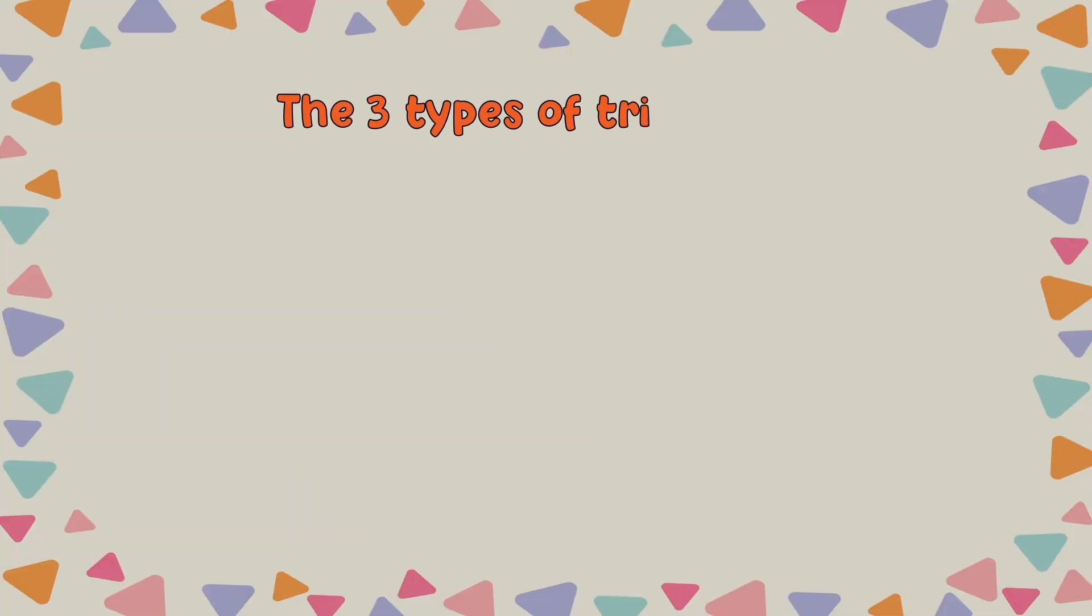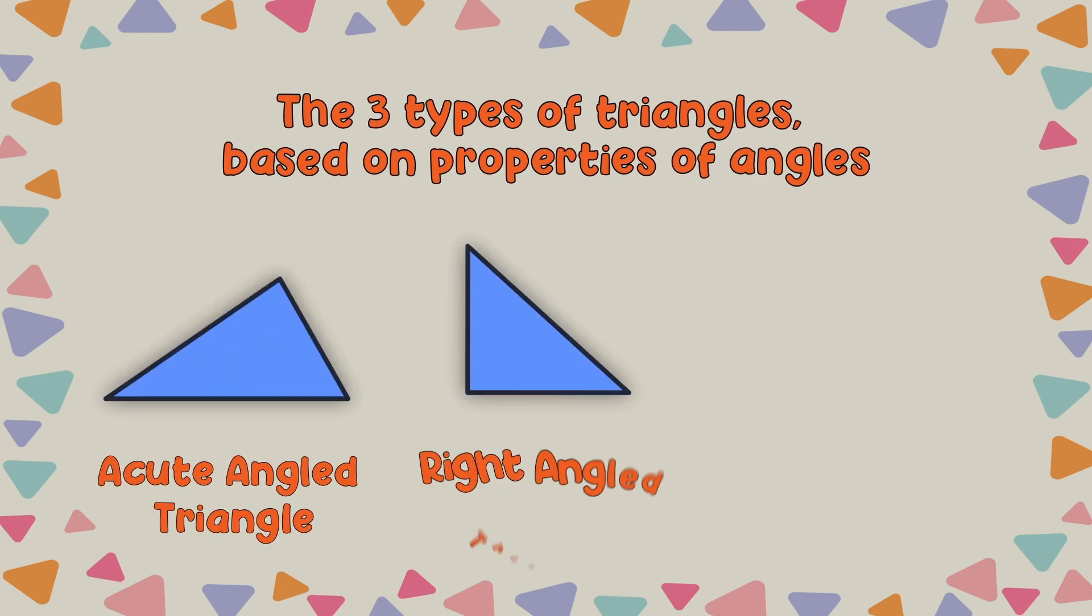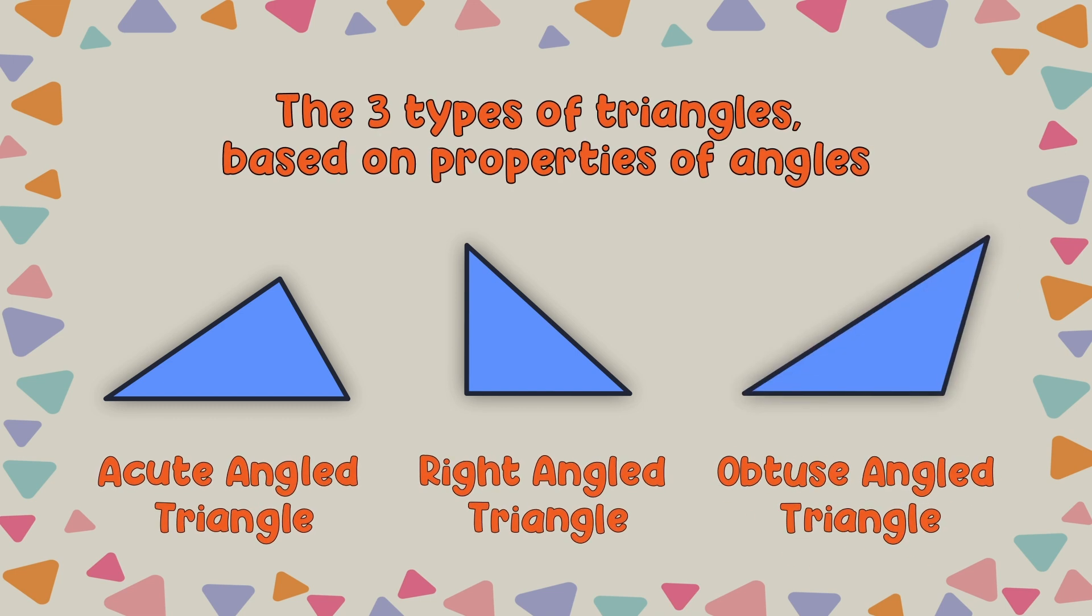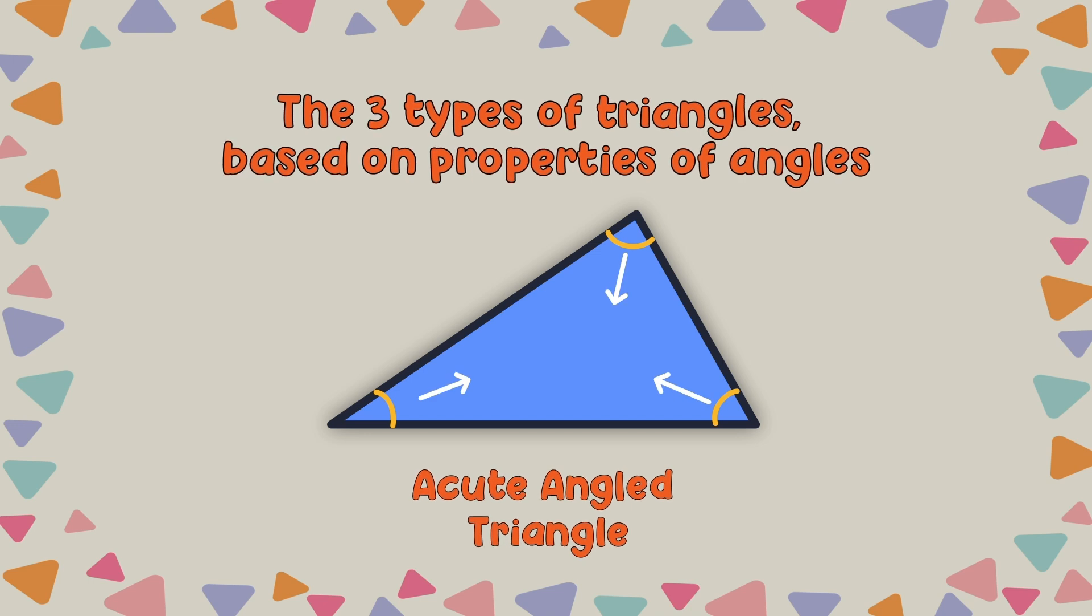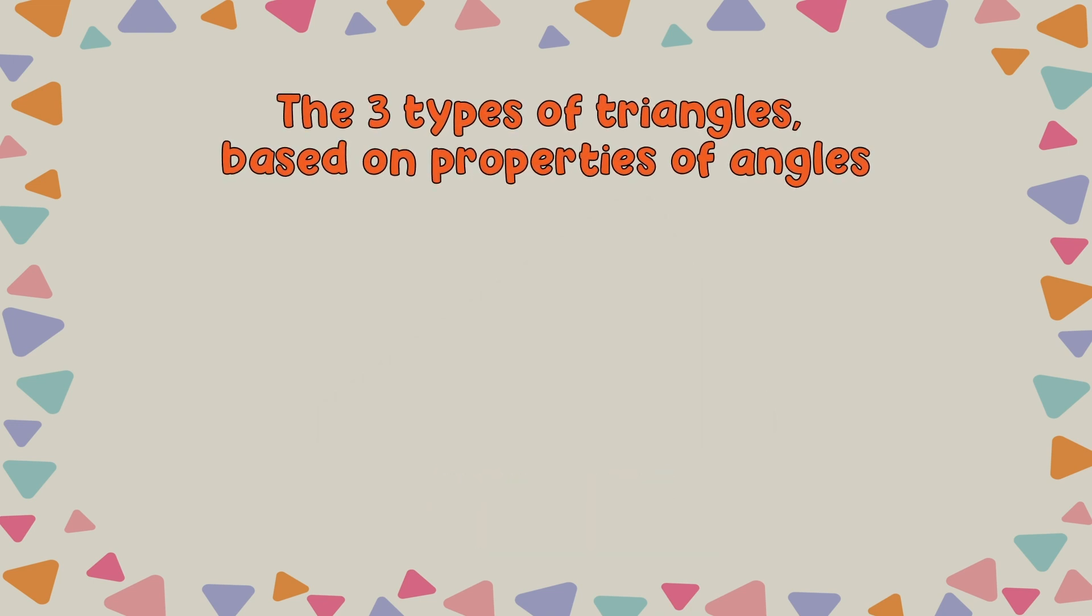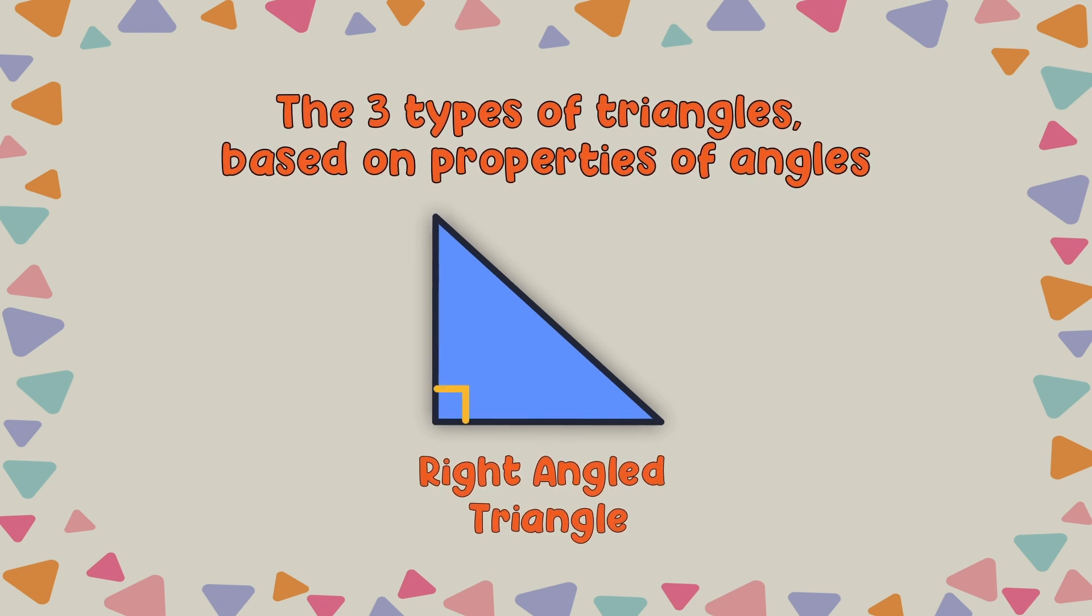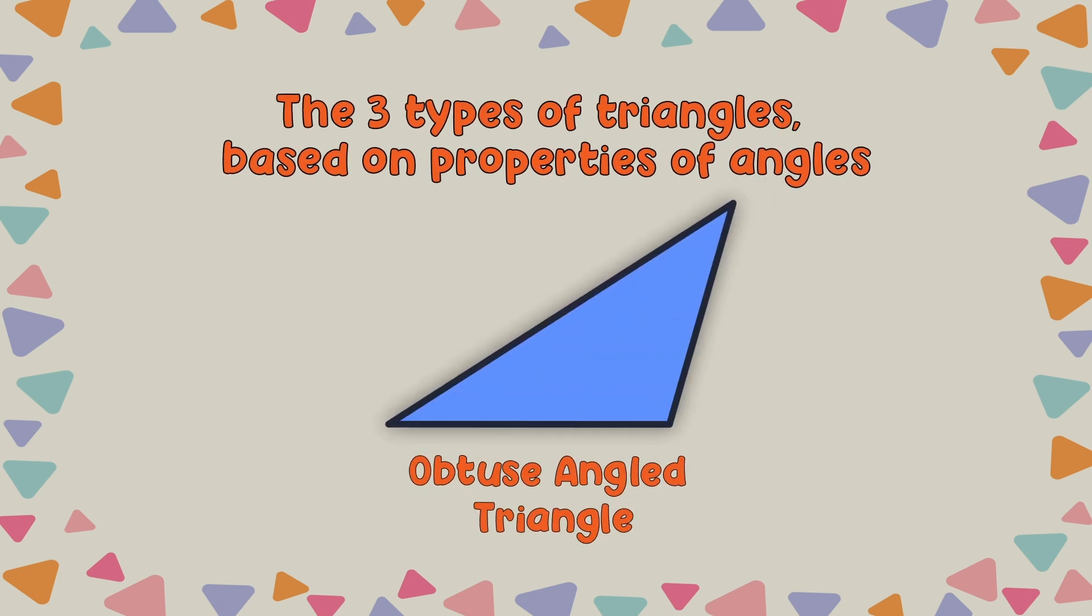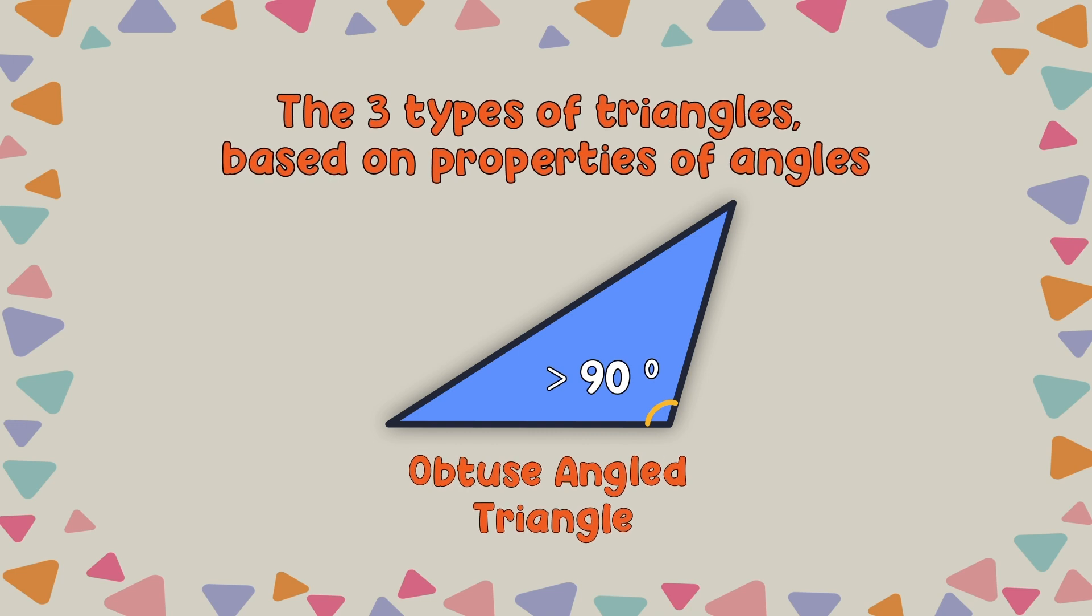The three types of triangles based on the properties of angles are Acute Angle Triangle, Right Angle Triangle and Obtuse Angle Triangle. All the angles in an Acute Angle Triangle are less than 90 degrees. In a Right Angle Triangle, one angle is 90 degrees. And in an Obtuse Angle Triangle, one of the angles is greater than 90 degrees.